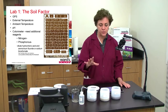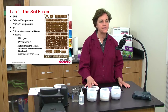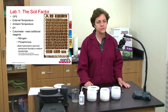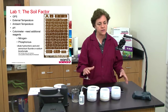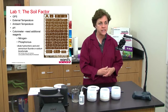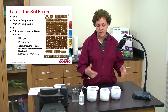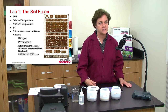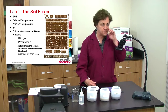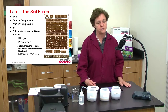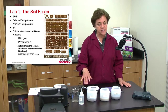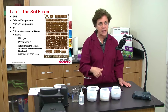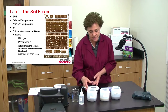So the first thing you can have students do is use GPS. You can also have them measure the ambient temperature — just what the air temperature is — and you could also have them check the humidity in that area before they bring the samples back.